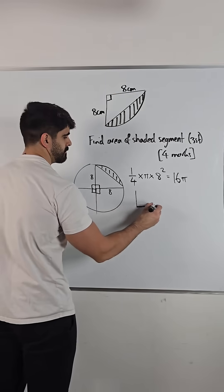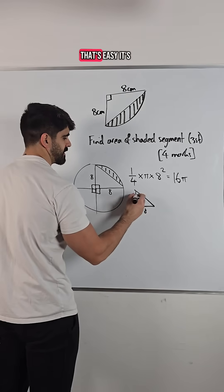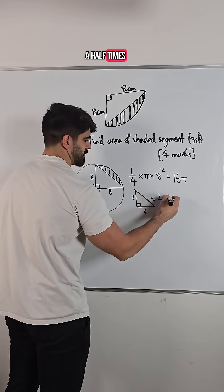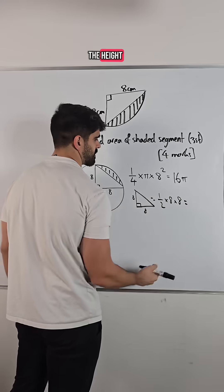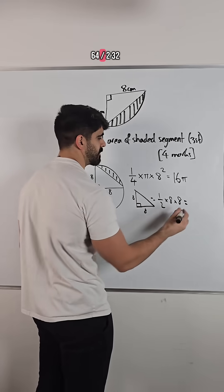And then we're just going to do the triangle. That's easy. It's a half times the base times the height. Eight times eight, 64 divided by two, 32.